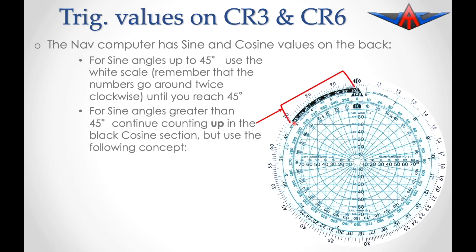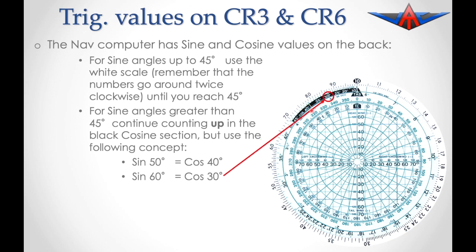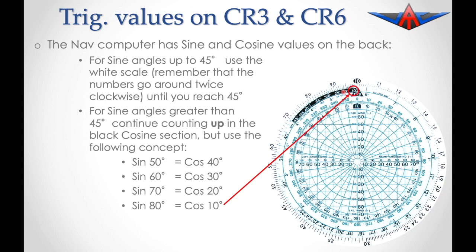For sine values greater than 45 degrees, continue counting upwards from 45 using the numbers in the sine band. So the sine of 50 is 10 degrees more than 40, so: 40, 45, 50. The sine of 60 is the same as the cosine of 30. The sine of 70 is the same as the cosine of 20. The sine of 80 is the same as the cosine of 10, and by the time we get to the sine of 90 that's the same as the cosine of 0 degrees.